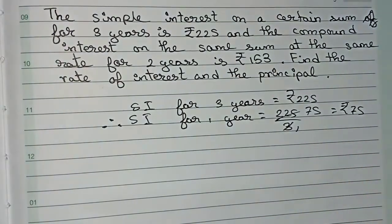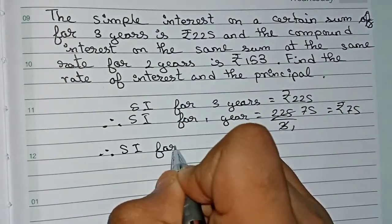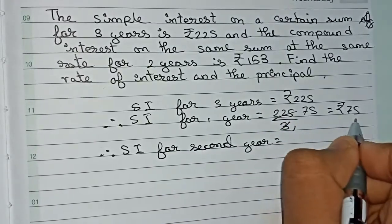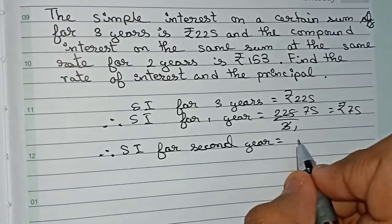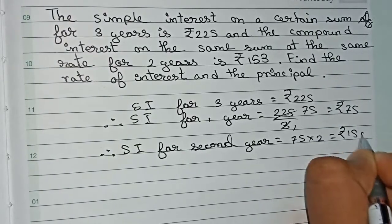Now you can also find the SI for the second year. SI for second year = 75×2 = ₹150.